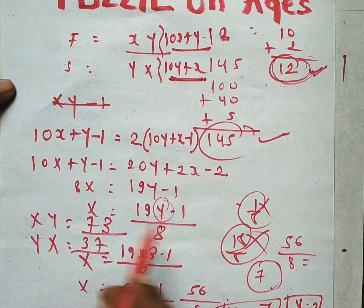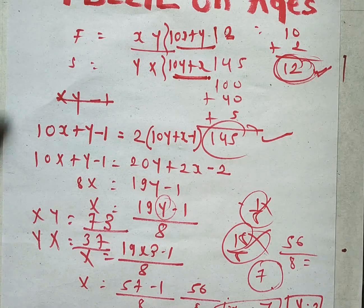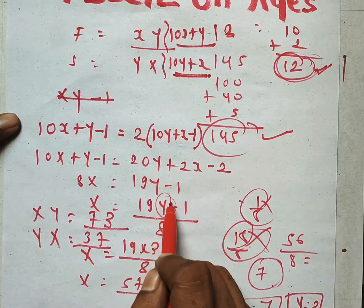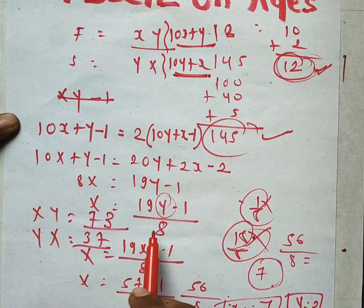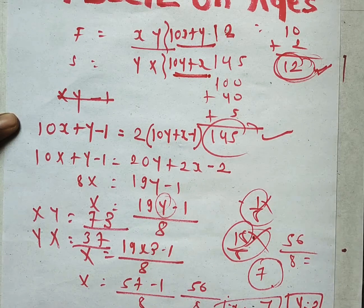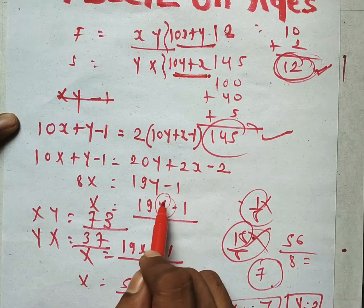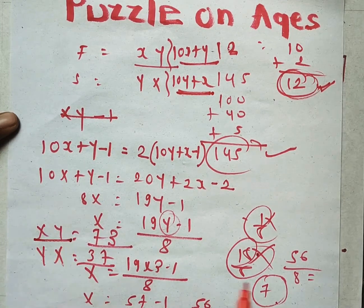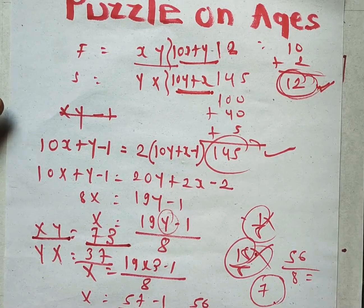After solving, we get 8x equals 19y minus 1, so x equals (19y minus 1) divided by 8. Since x and y are digits, we use trial and error. Putting y equals 3 gives 56 upon 8, so x equals 7. With x equals 7 and y equals 3, the father's current age is 73 and the son's age is 37.